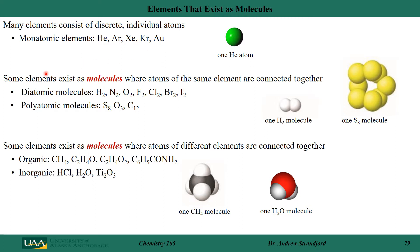Some elements exist as molecules where atoms of the same element are actually connected together — we call that bonding. For example, hydrogen does not exist as a single hydrogen atom; it actually exists as two hydrogen atoms connected together. Another example is S₈, which exists as eight sulfur atoms connected together. It does not exist as an individual sulfur atom most of the time.